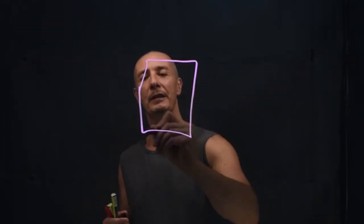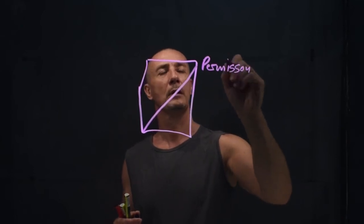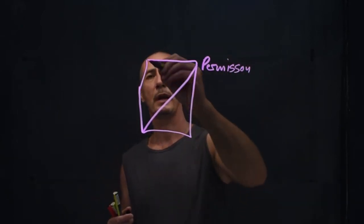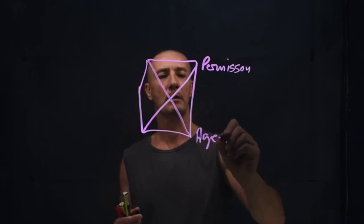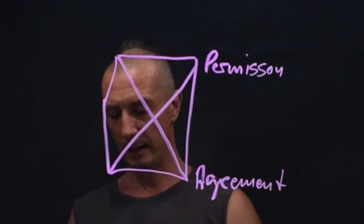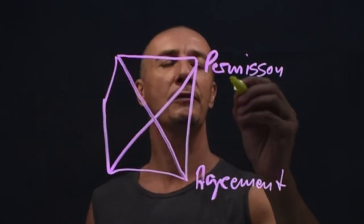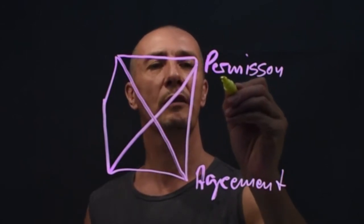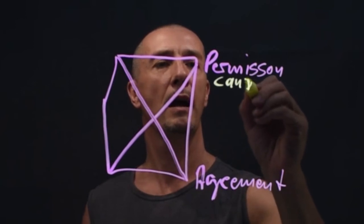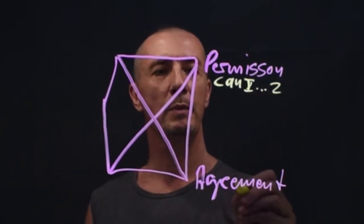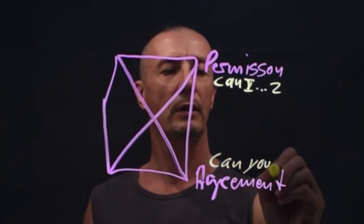Then we have the permission line, which is the consent part, and we have the agreement line. So when you have the permission line and the agreement line, you have in the permission line, you ask for permission to do something for yourself. So can I.